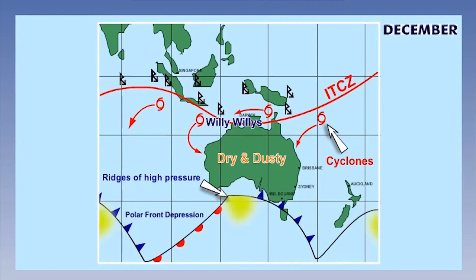On occasions, a strong southerly cold wind is experienced behind active cold fronts. These are called the southerly busters.